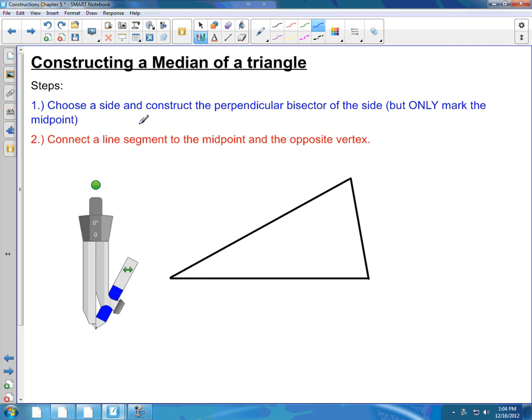You only mark the midpoint of the segment that you're bisecting. After you've done that, step two: connect a line segment from the midpoint to the opposite vertex. Don't forget to mark the picture properly.